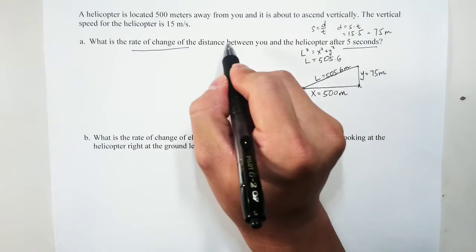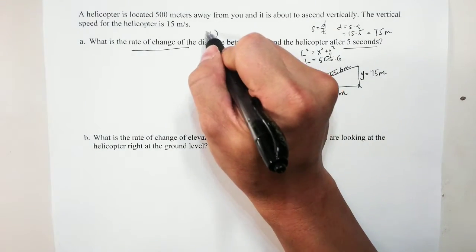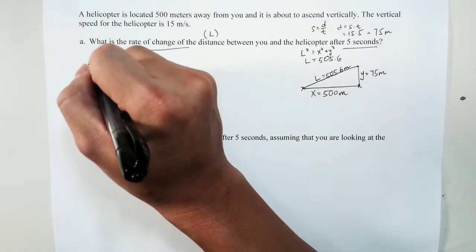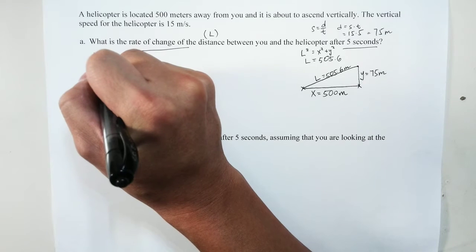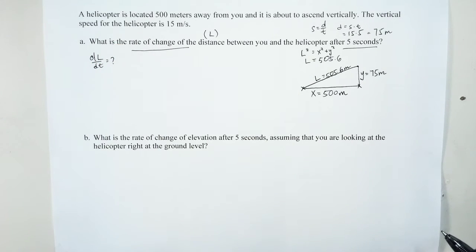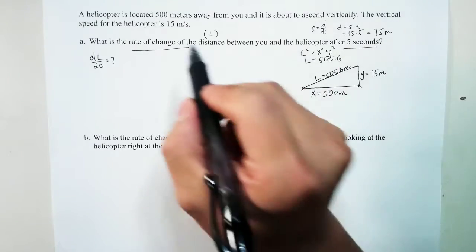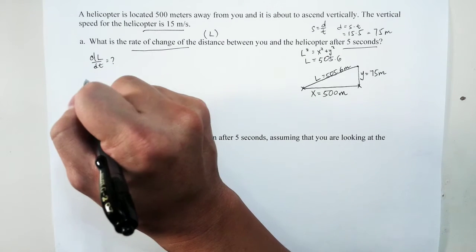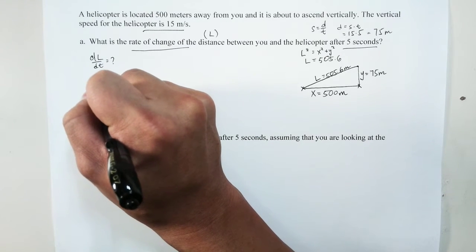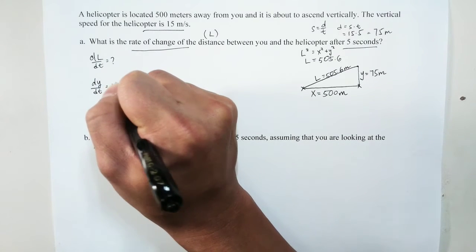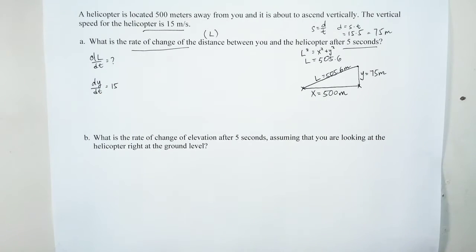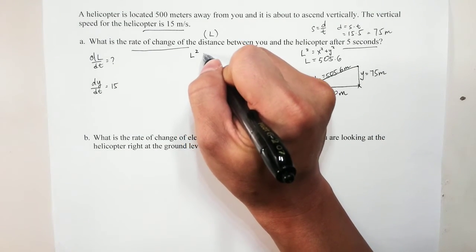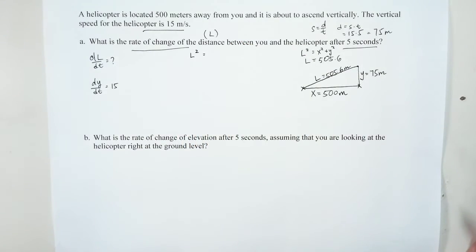The rate of change of the distance is dl/dt, and that is what we are solving for. We know the helicopter's vertical speed is 15 meters per second, so dy/dt equals 15 meters per second.